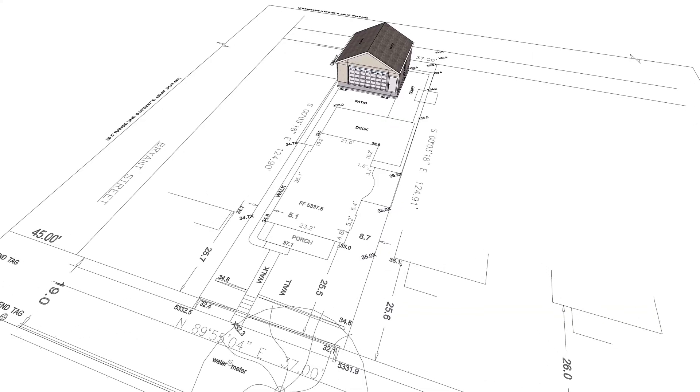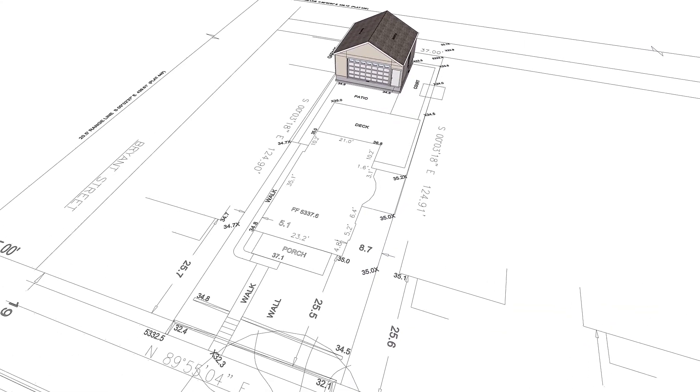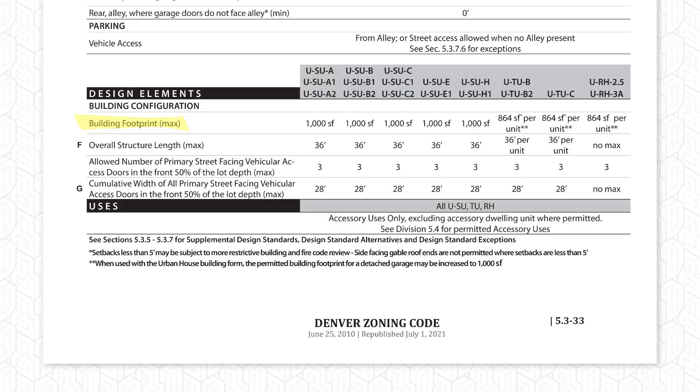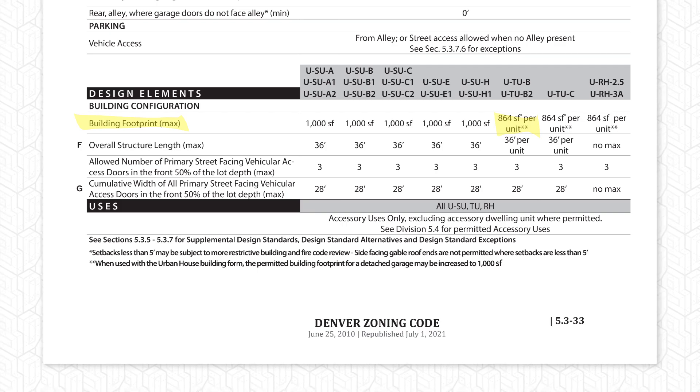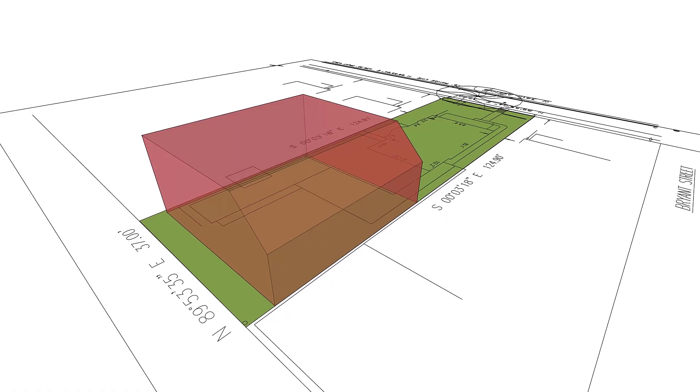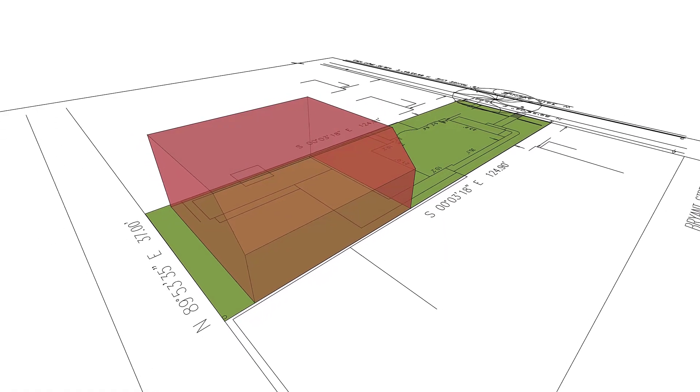Along the way, we're going to upgrade SketchUp's stock aerial imagery, import and scale an improvement survey, and decipher and distill Denver's mind-numbing zoning code into a clear-cut visual diagram.